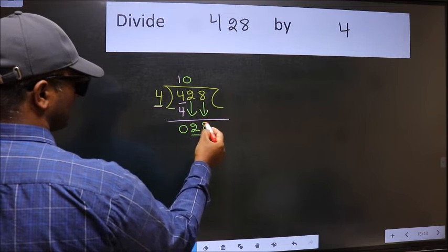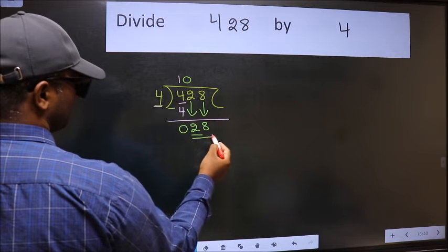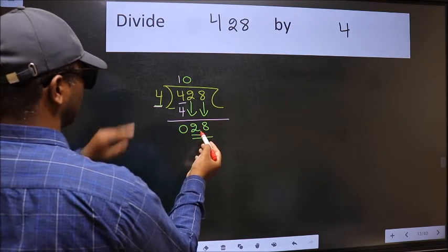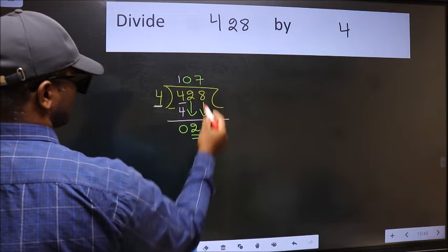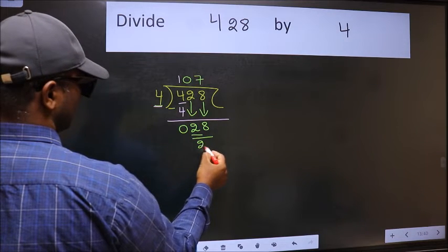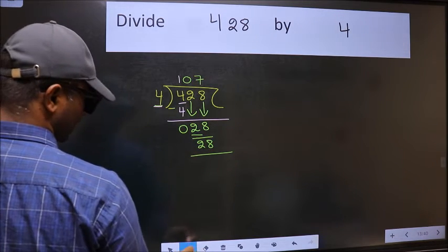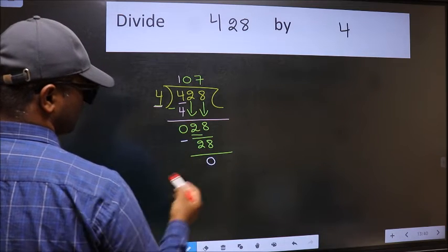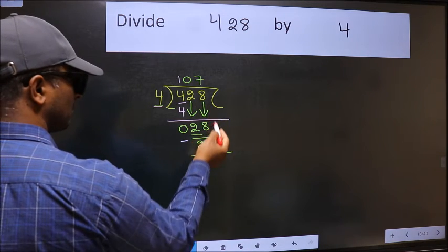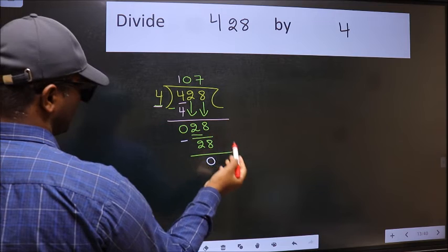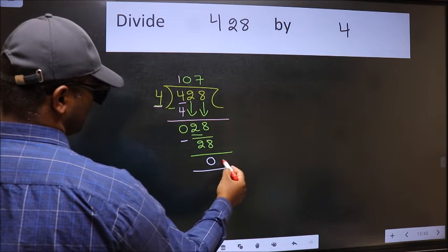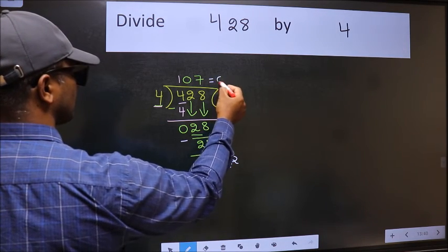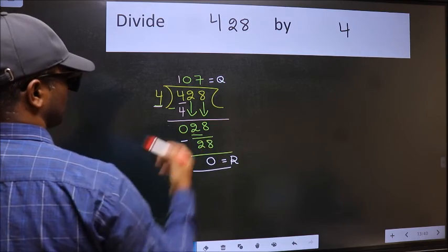Now 28 — when do we get 28 in the four table? Four sevens are 28. Now we should subtract — we get zero. No more numbers to bring down, so we stop here. This is our remainder and this is our quotient.